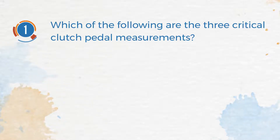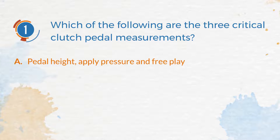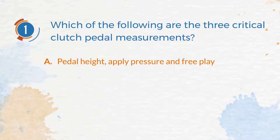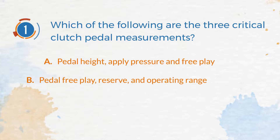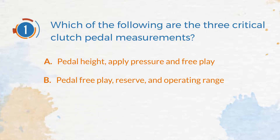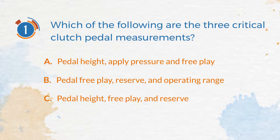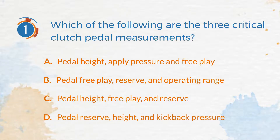Number 1. Which of the following are the three critical clutch pedal measurements? A. Pedal Height, Apply Pressure and Free Play. B. Pedal Free Play, Reserve, and Operating Range. C. Pedal Height, Free Play, and Reserve. D. Pedal Reserve, Height, and Kickback Pressure.